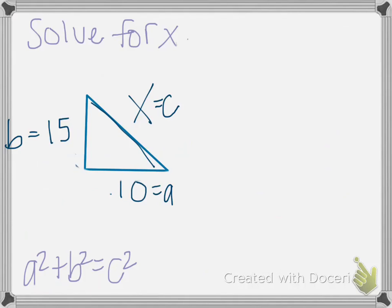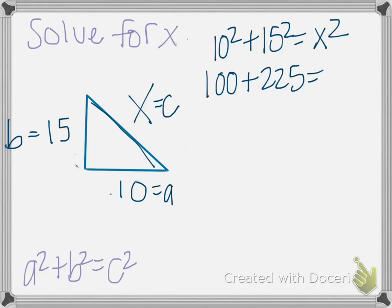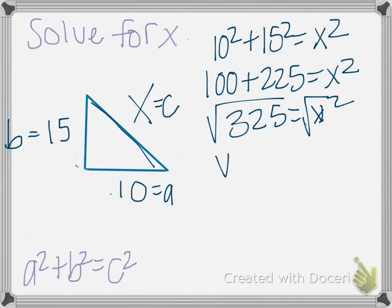So plugging in the numbers into our equation, we have 10 squared plus 15 squared equals X squared. Now we just need to solve for X. So we have 100 plus 225 is equal to X squared. Adding them together, we have 325 is equal to X squared. And then we need to take the square root of both sides, and that leaves us with the square root of 325 equals X.